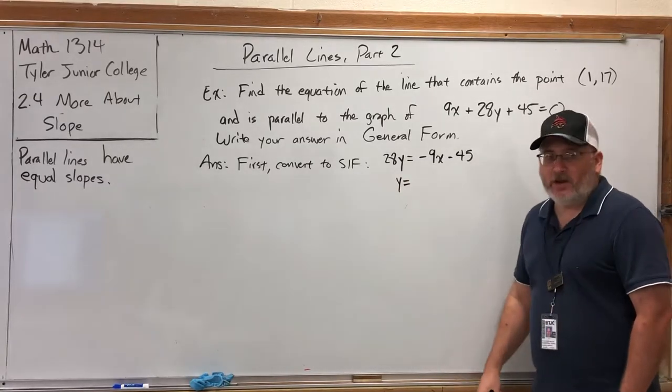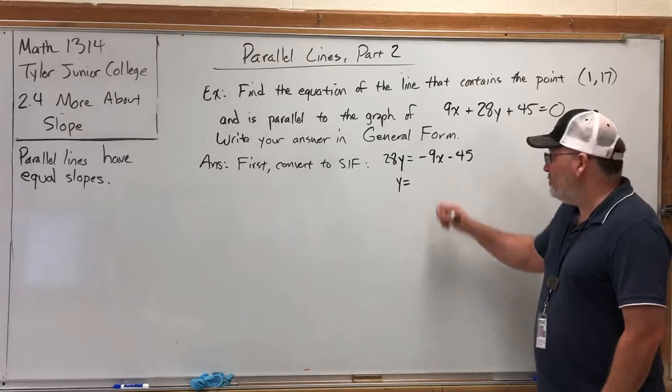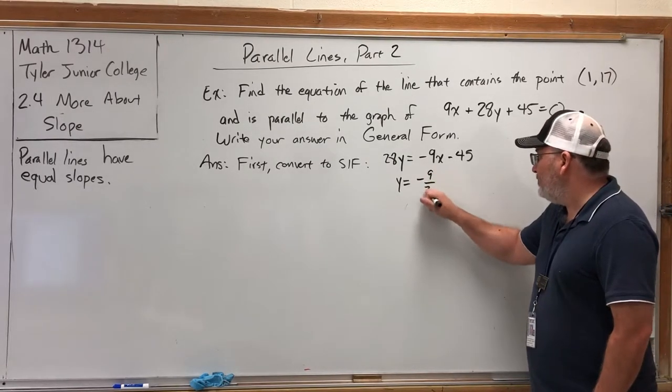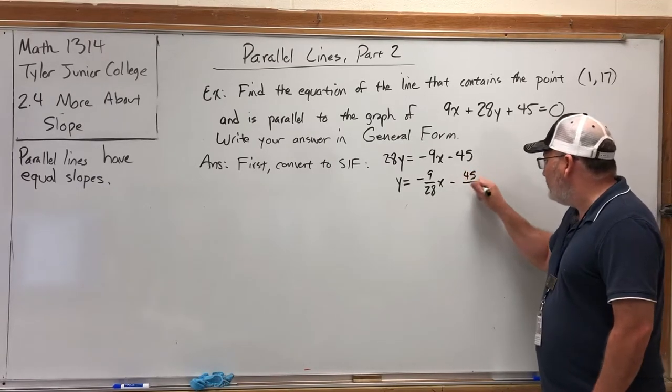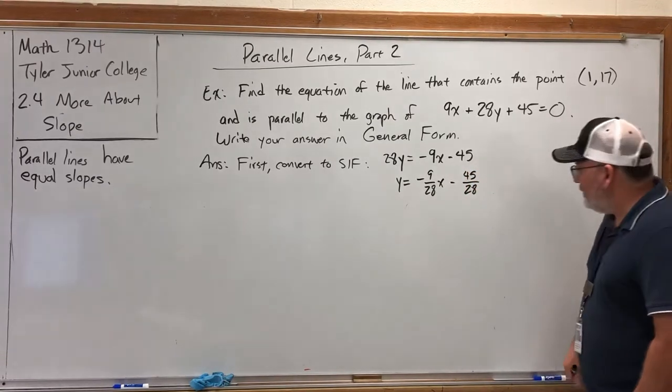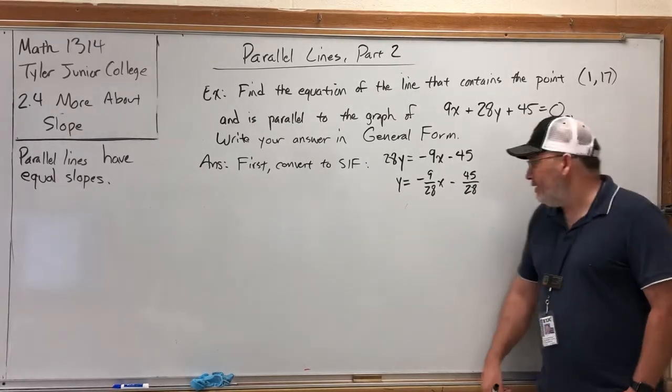Now I could write all this over 28, but I know I'm going to split it into two fractions next, so I might as well do that first: negative 9/28 X minus 45/28.